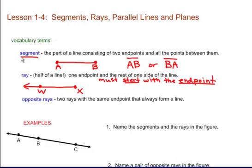When you name a ray, you must start with the endpoint. Where's the endpoint in this picture? At X. So I start at X. Which way is the line going? It's going towards W. So to show it's a ray, I just do half of a line — only one arrow. Even though you see this ray going to the left in the picture, when I name it, the arrow always shows I start at the endpoint X and I'm going the direction of W. You have to be careful with this — it can be very confusing.